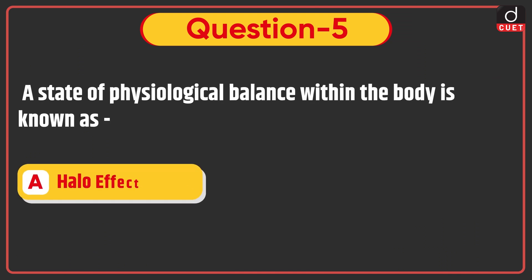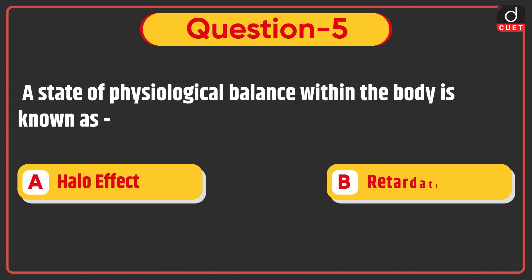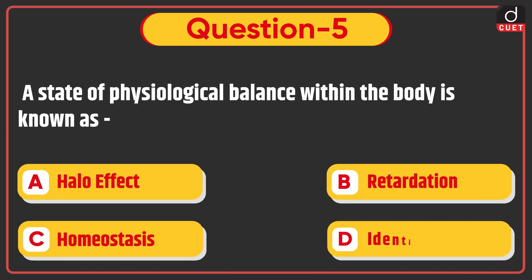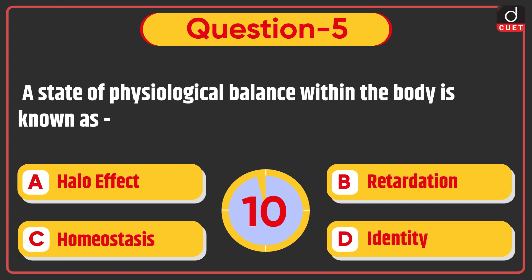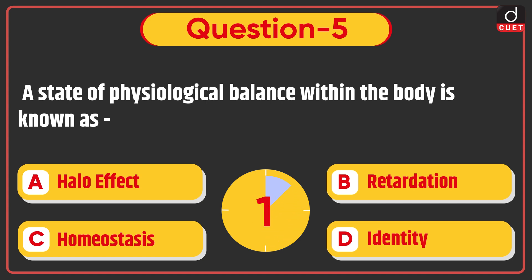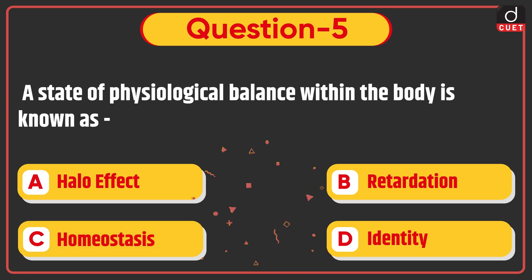Next question: A state of physiological balance within the body is known as — Halo effect, Retardation, Homeostasis, or Identity. The correct answer is option C, Homeostasis.